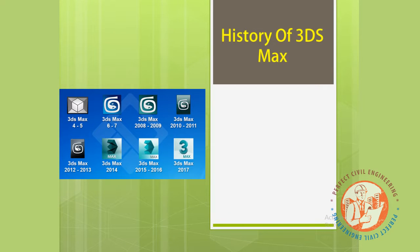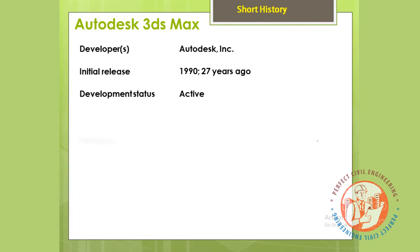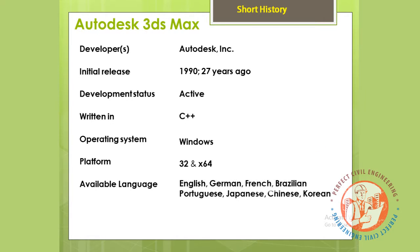History of 3DS Max: Developer is Autodesk Incorporated, initial release 1990, 27 years ago, development status active, written in C++. Operating system: Windows. Platform: 32-bit and 64-bit. Available languages: English, German, French, Brazilian Portuguese, Japanese, Chinese, Korean. License: trial available.